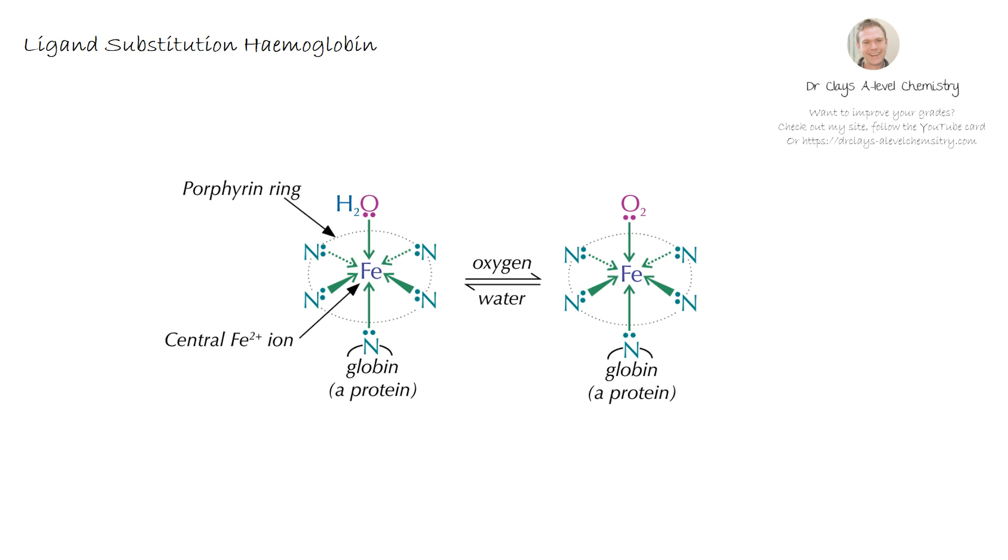Now we are going to look at ligand substitution and haemoglobin. Haemoglobin is a protein that we find in our blood and most people know it is used as the carrier for oxygen. It consists of a central iron 2 plus ion and a globin molecule or protein and this is very large compared to the complex ion. We have then a multi-dentate porphyrin ring which has got 4 dative covalent bonds all via the nitrogen atoms. And then we have the space at the top here which is available for ligand substitution.